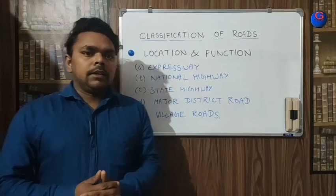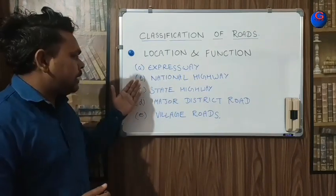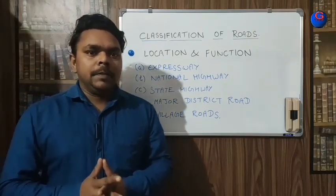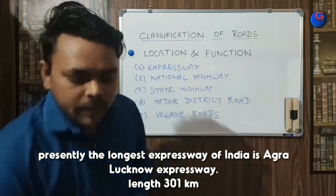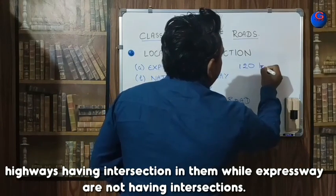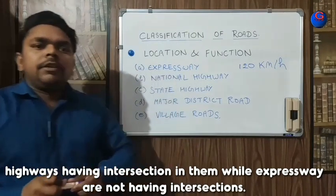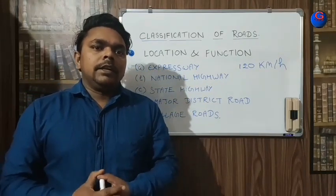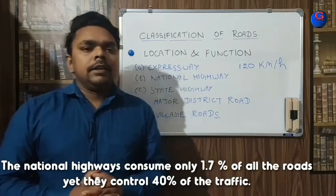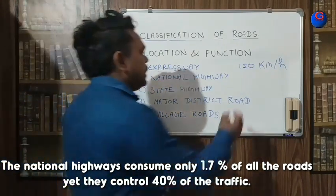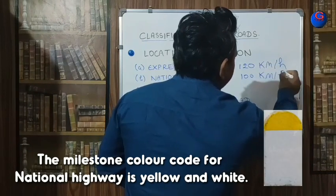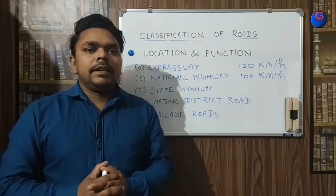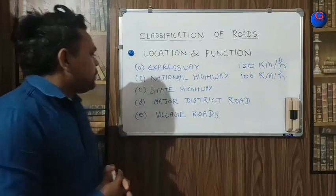The second factor for classifying roads is location and function. Types include: expressway, national highway, state highway, major district roads, and village roads. Expressways are specially designed for high-speed traffic with a design speed limit of 120 kilometers per hour and are governed by the central government. National highways have a ruling design speed of 100 kilometers per hour and function to connect various districts, states, and industrial areas to harbors.